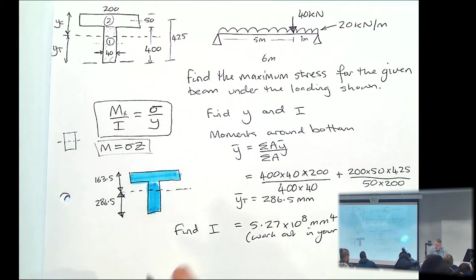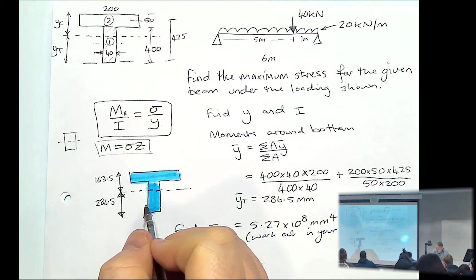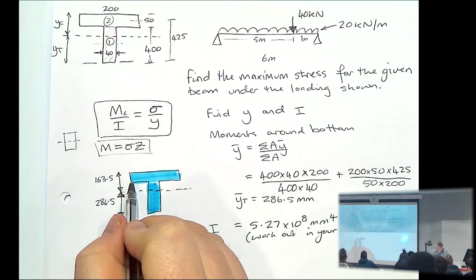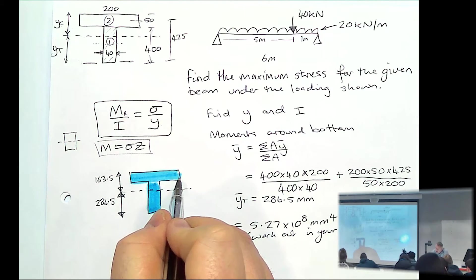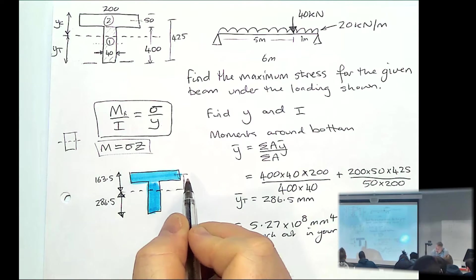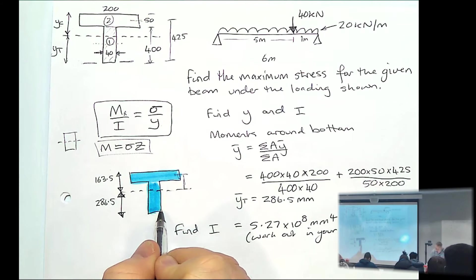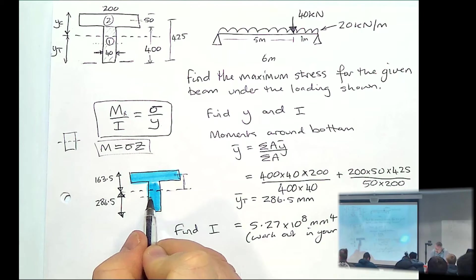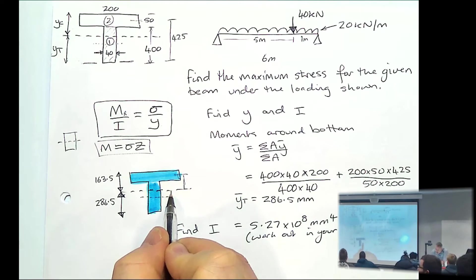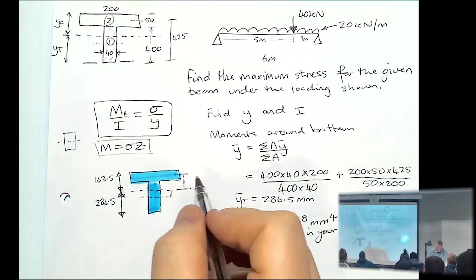So you have to use the parallel axis theorem. So you've got your BD cubed over 12 times by the area, times by that distance there. Plus the BD cubed of this one, multiplied by the distance, times by the area. Well, it's the distance squared.